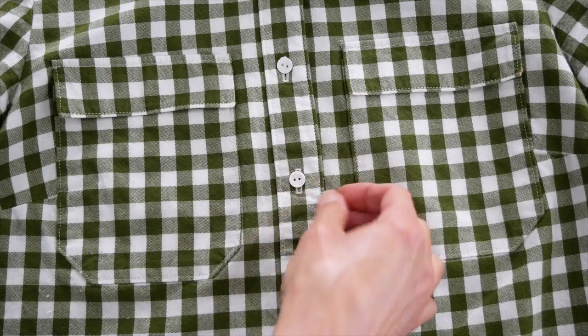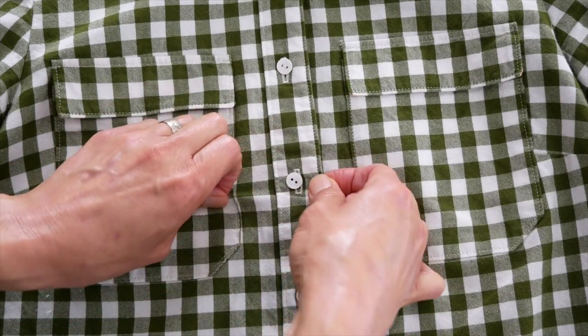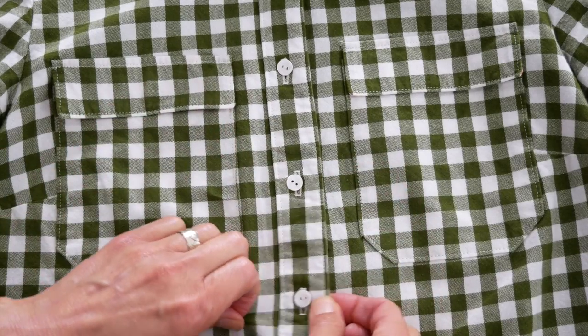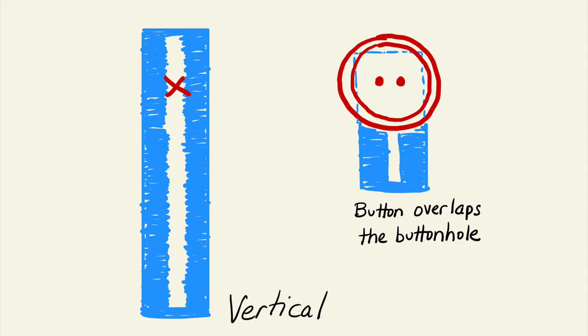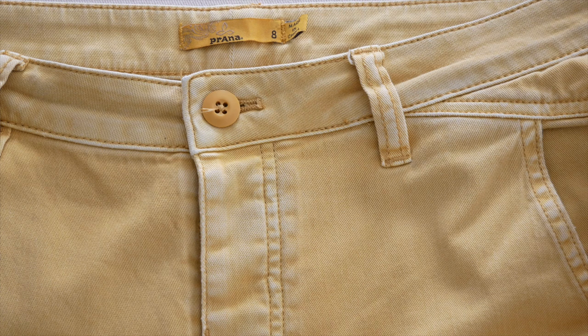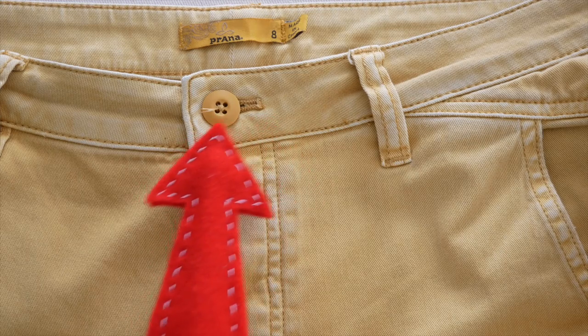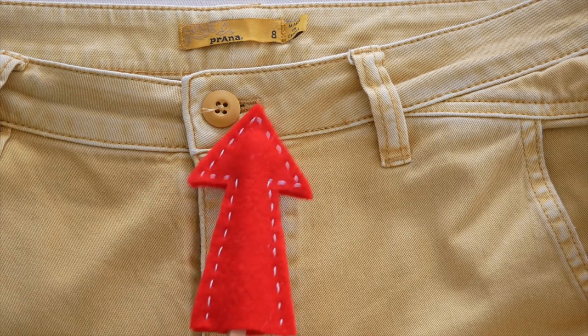When a button is sewn in the center of a buttonhole, it can easily work itself free, especially the combination of a front button closure and a crossbody bag. So for vertical buttonholes, you're going to sew the button one-eighth inch down from the top of the buttonhole. On a horizontal buttonhole, same idea, just on its side.